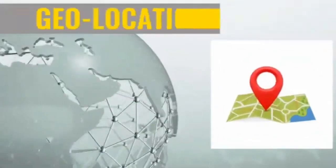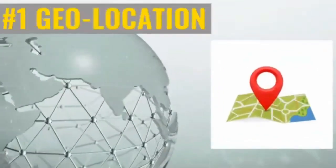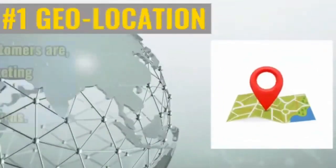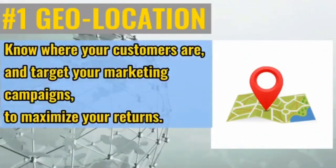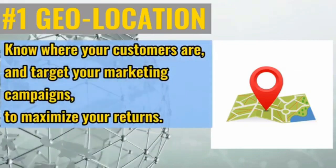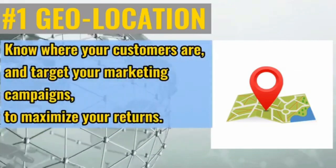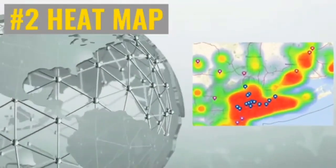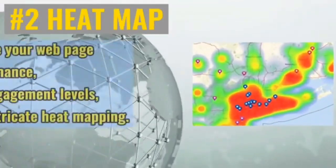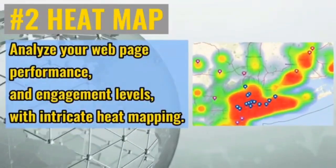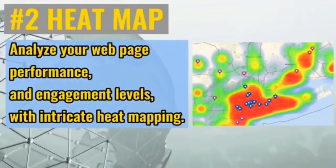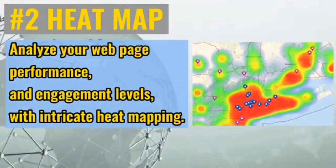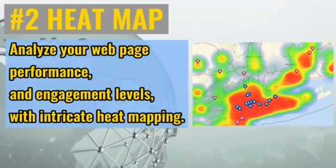Number one: geo location — know where your customers are and target your marketing campaigns to maximize your returns. Number two: heat map — analyze your web page performance and engagement levels with intricate heat mapping.